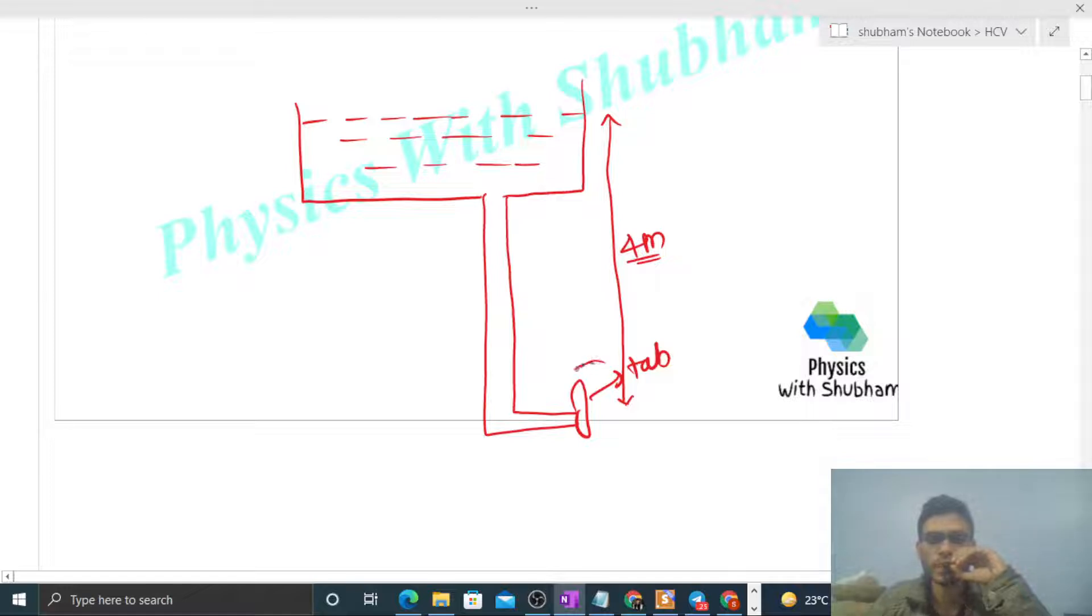We have to find out the pressure at the tap. Now you can see this top surface which is at atmospheric pressure, and at height h below the top surface, what will be the pressure in the liquid?